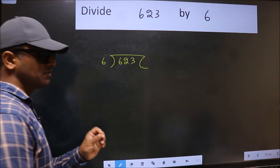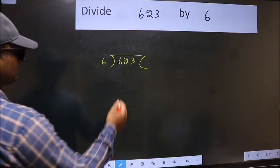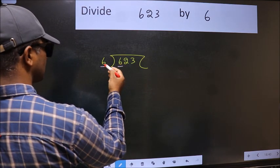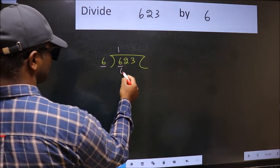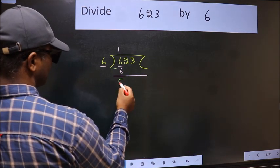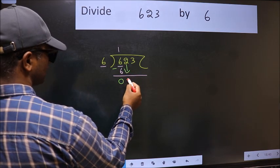This is your step 1. Next, here we have 6 and here also 6. When do we get 6 in 6 table? 6 times 6. Now we should subtract. We get 0. After this, bring down the beside number, so 2 down.